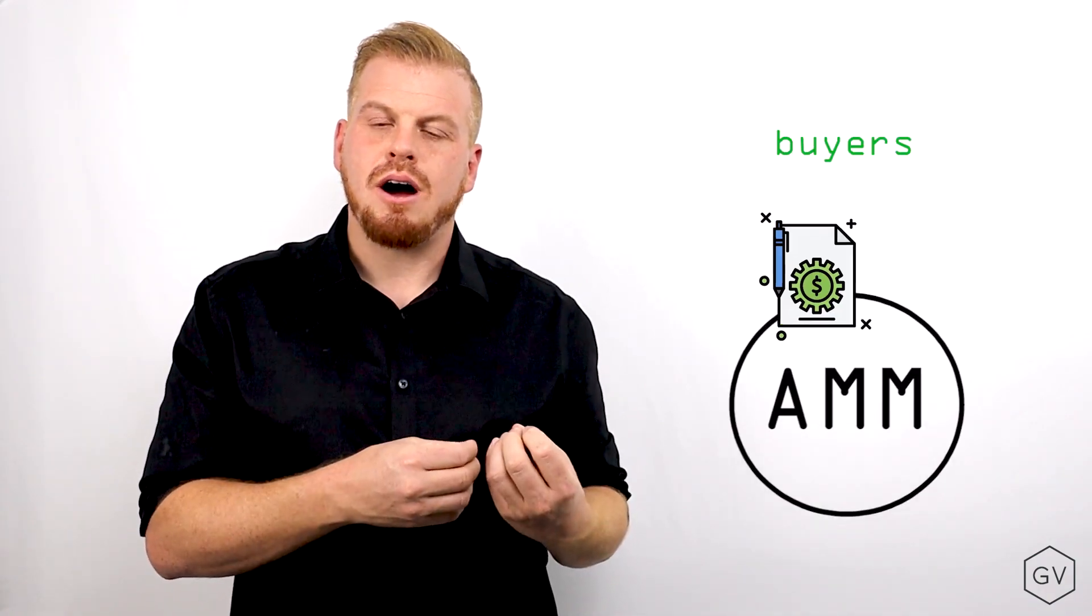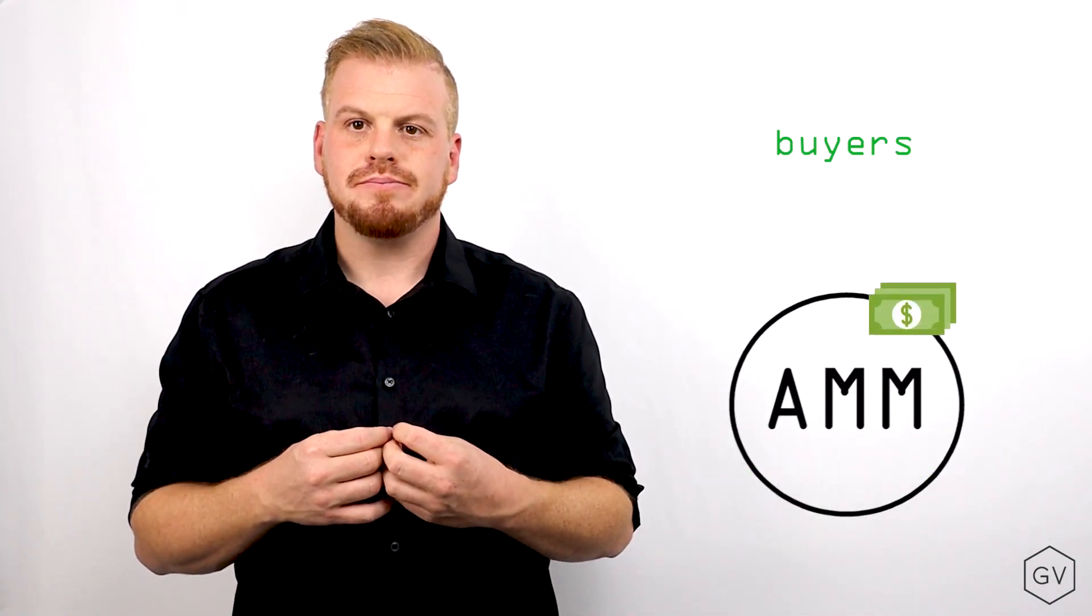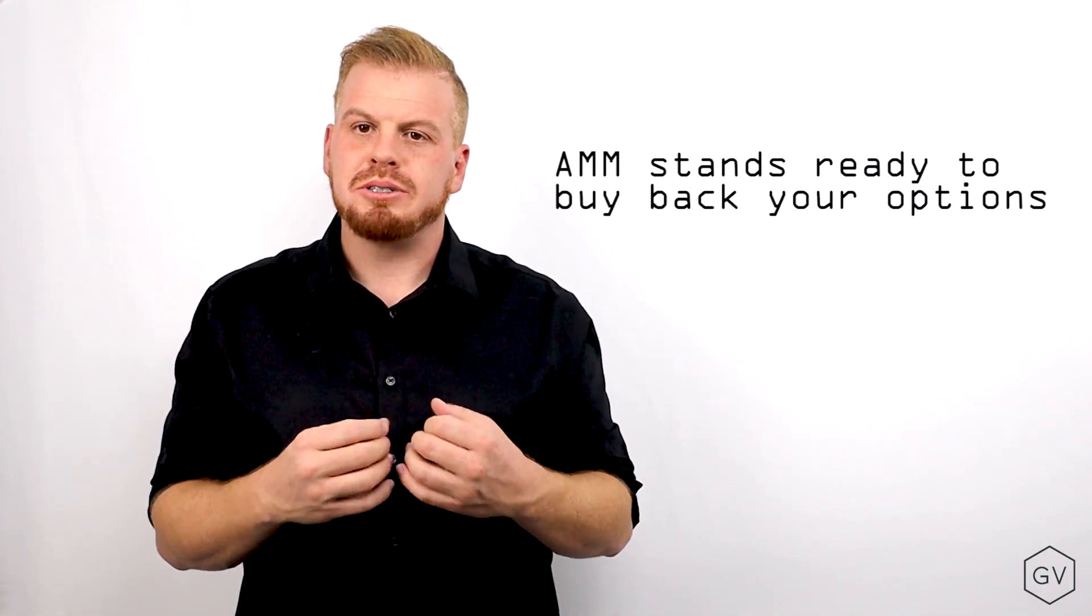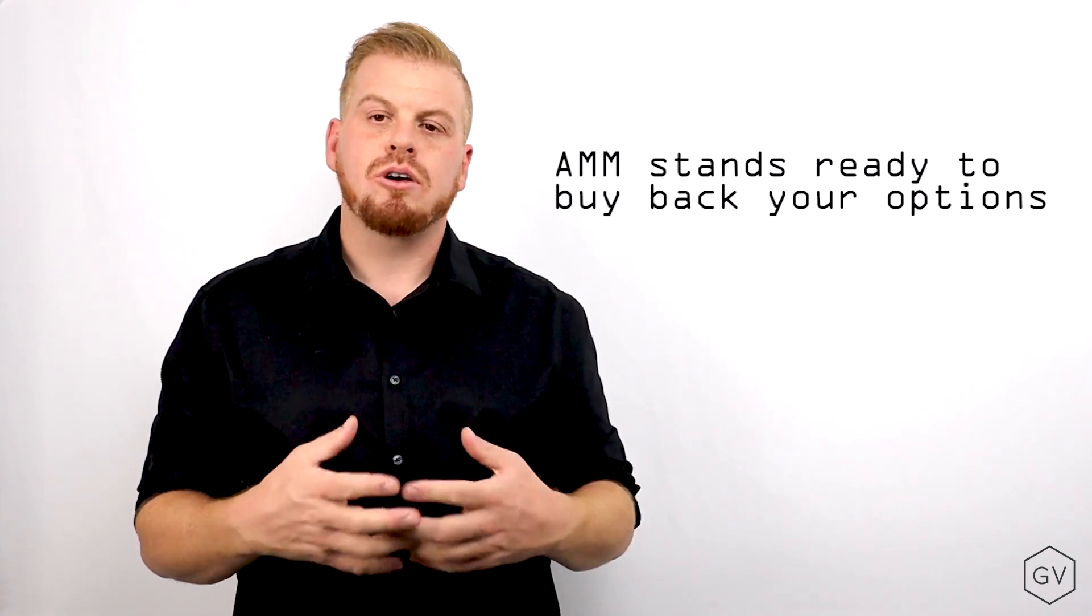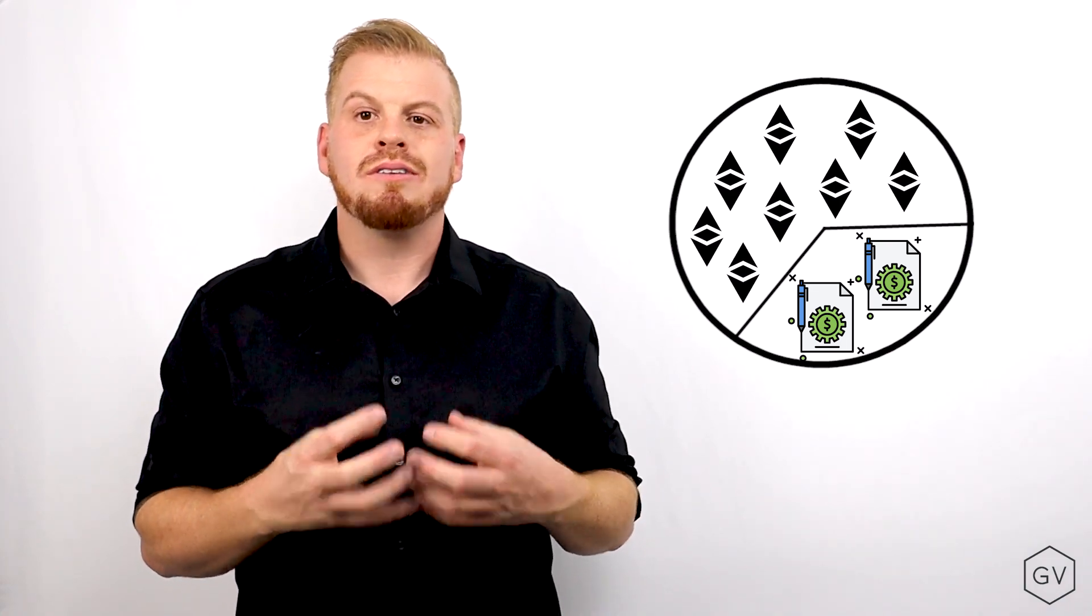The third feature of the SIREN AMM is that option buyers can then sell their options back to the AMM, which means that option buyers don't have to hold their options all the way to expiration, and they can actually capitalize on gains earlier before the option expires.